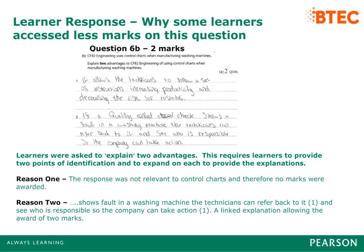Learners were asked to explain two advantages of control charts. This requires learners to provide two points of identification and to expand on each to provide the explanations. This proved to be a challenging question. It was clear that some learners have used or seen control charts during their studies but had limited knowledge of why they are required when manufacturing products. Where learners did score, it was usually in the form of a low response. One learner's Reason 2 contained a linked response: 'shows fault in a washing machine, the technicians can refer back to it' (one mark), 'and see who is responsible so the company can take action' (one mark).